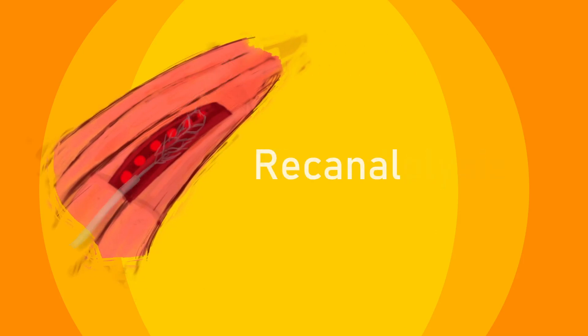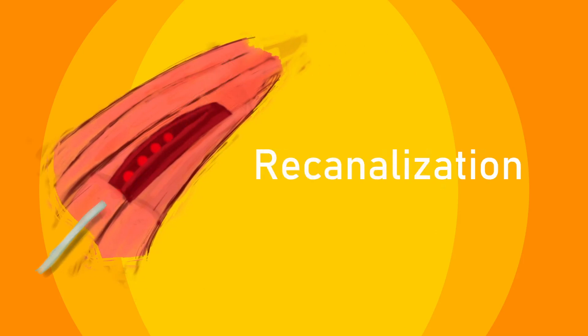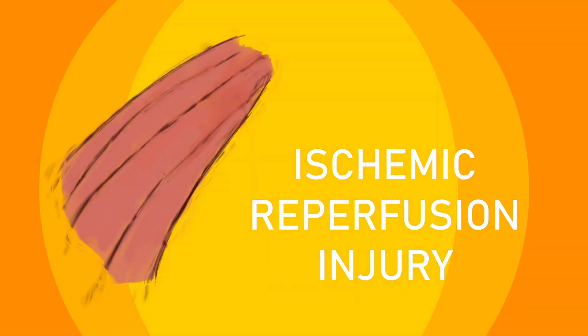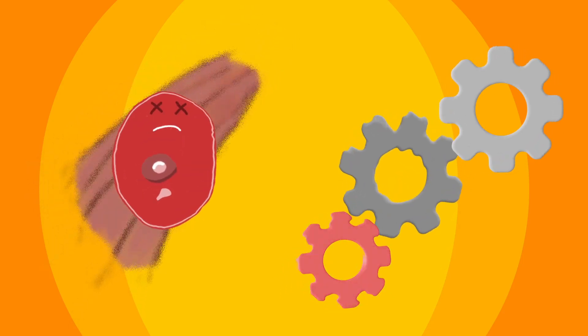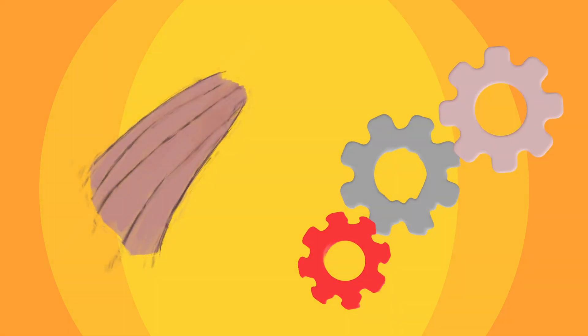Restoration of blood flow following ischemic stroke can be achieved by means of thrombolysis or mechanical re-canalization. However, reperfusion may paradoxically increase the injury initially caused by ischemia, producing what is now called ischemic reperfusion injury. It occurs when damaging processes are set in motion during reperfusion, causing the death of cells that might have recovered otherwise.